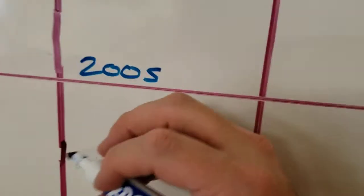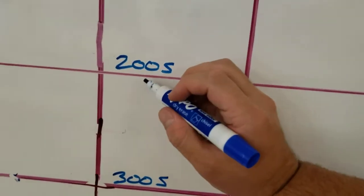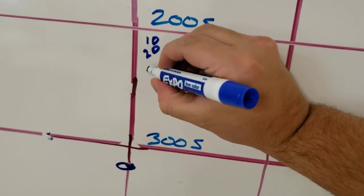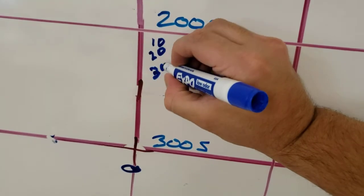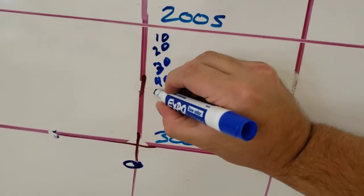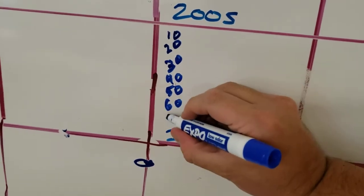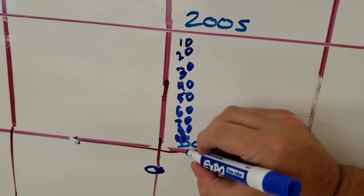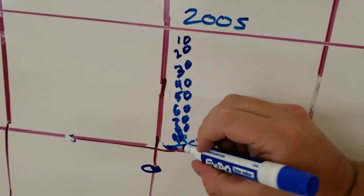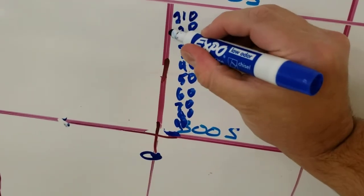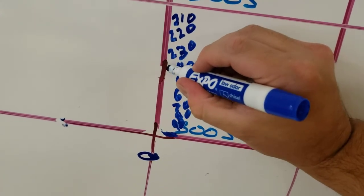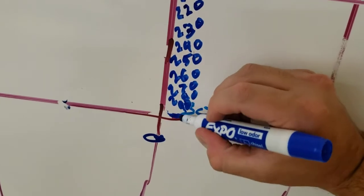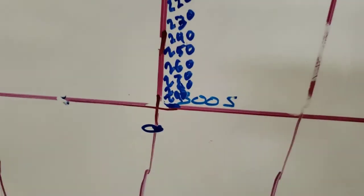So, you can just kind of imagine, we're counting up from 200 to 300. So, it's going to be 10, 20, 30, 40, 50, 60, 70, 80, 90, and then 300. Okay, so these are all going to be 210, 220, 230, 240, 250, 260, 270, 280, 290, and so on.